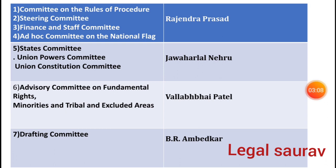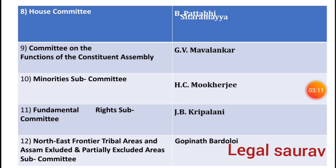The seventh was the Drafting Committee, headed by B.R. Ambedkar. Eighth was the House Committee, headed by B. Siddharamaiah. Ninth was the Committee on the Functions of the Constituent Assembly, headed by G.V. Mavalankar. Tenth was the Minority Sub-committee, headed by S.C. Mukherjee. Eleventh was the Fundamental Rights Sub-committee, headed by J.B. Kripalani. Twelfth was the North-East Frontier Tribal and Assam Excluded and Partially Excluded Areas Sub-committee, headed by Gopinath Bardoloi.